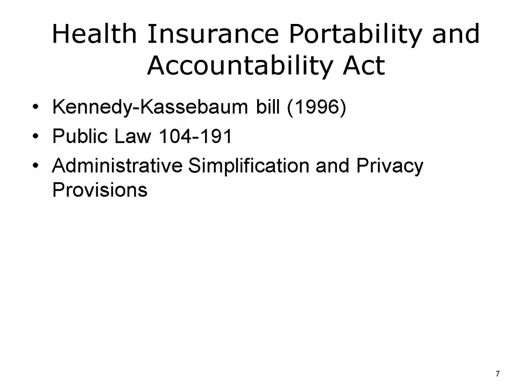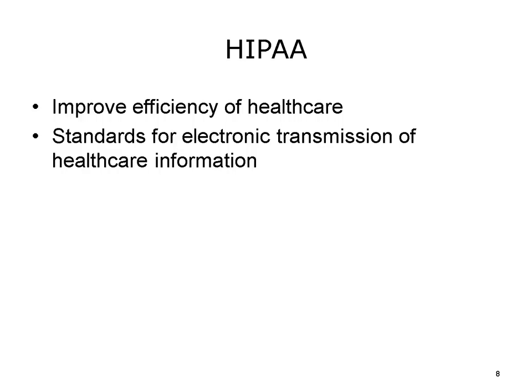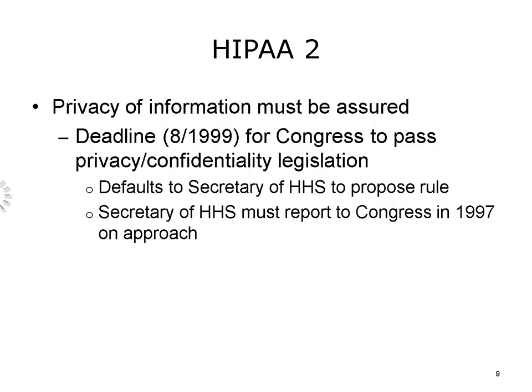Some people think the entire HIPAA legislation deals with insurance portability issues, and others think it refers only to privacy of health information. Actually, the main act does relate to portability issues, but there is a small provision known as the Administrative Simplification Provision that deals with privacy. The purpose of this provision is to improve the efficiency of those transactions that are part of the larger legislation. If people are going to be able to transfer their health insurance, there has to be a way to efficiently transfer their health information as well, and much of that transfer is going to be electronic. Standards, both technical and policies, can make this transfer more efficient and effective.